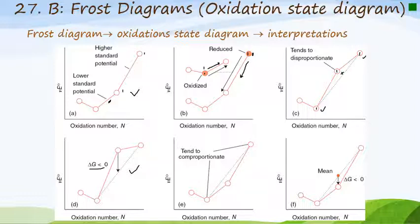Diagrams E and F show the indication of a species to comproportionate. In diagram E, two less stable species will tend to comproportionate to form the intermediate species. Diagram F shows that ΔG is negative, meaning the comproportionation reaction will spontaneously occur.